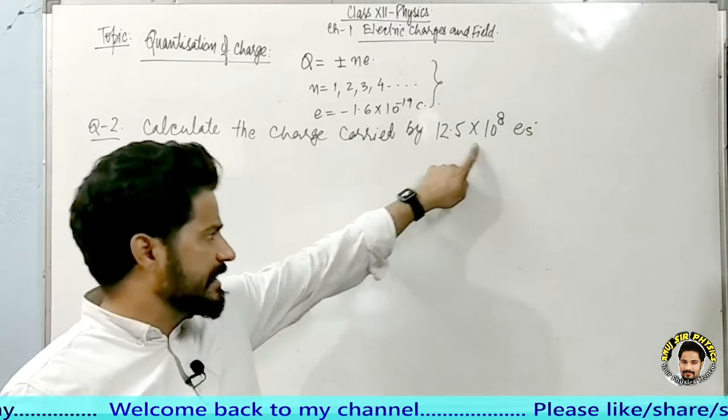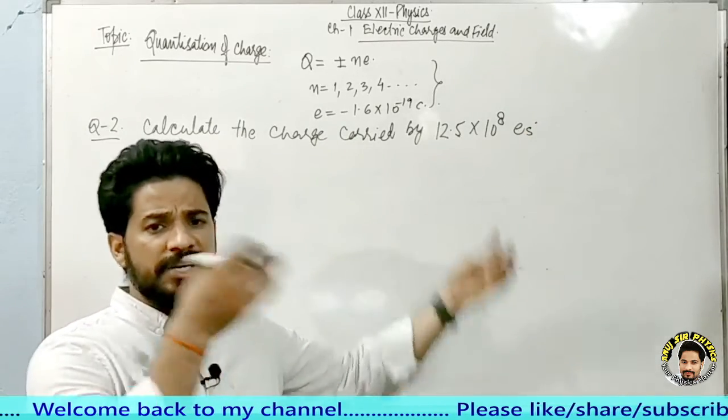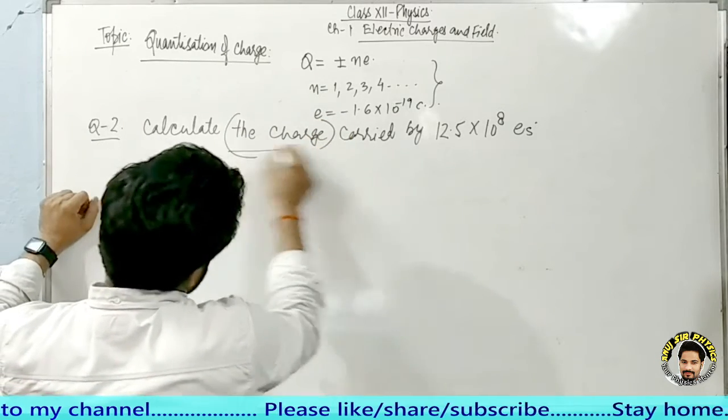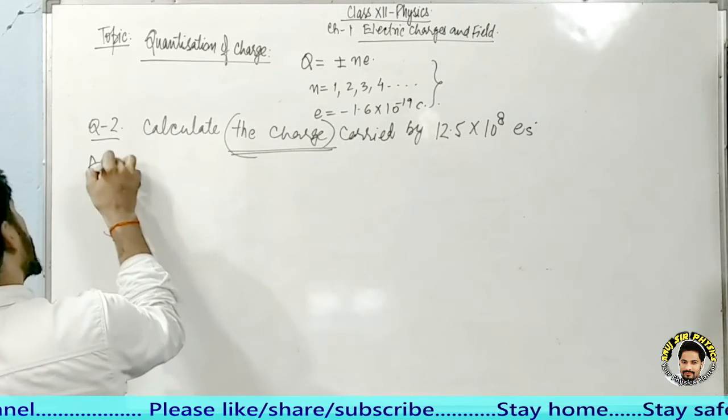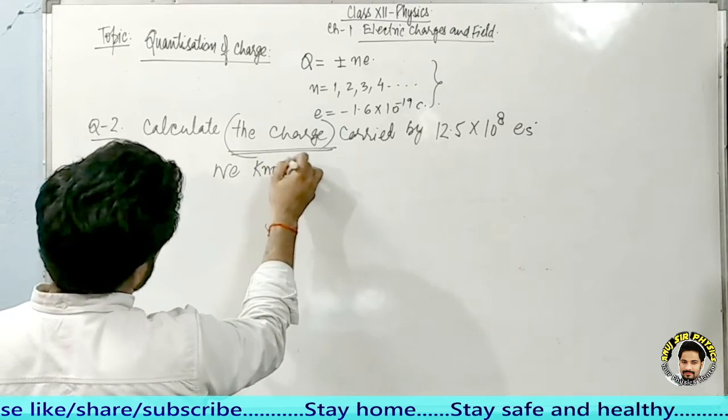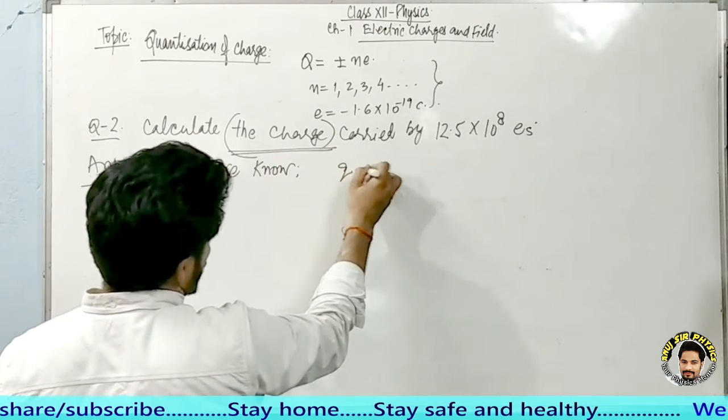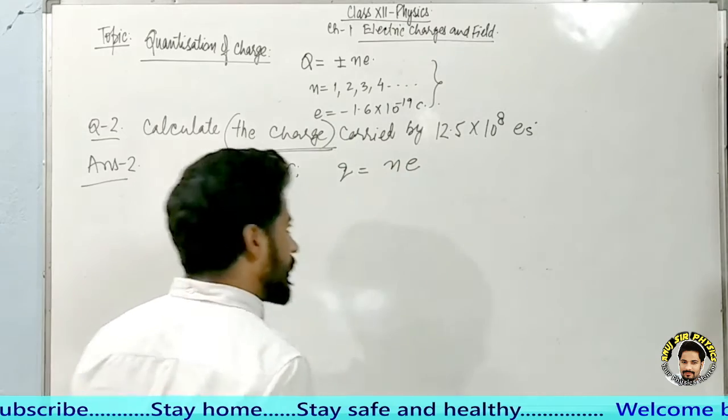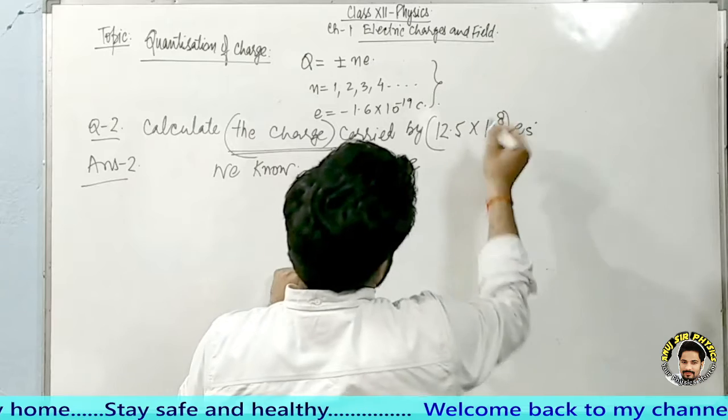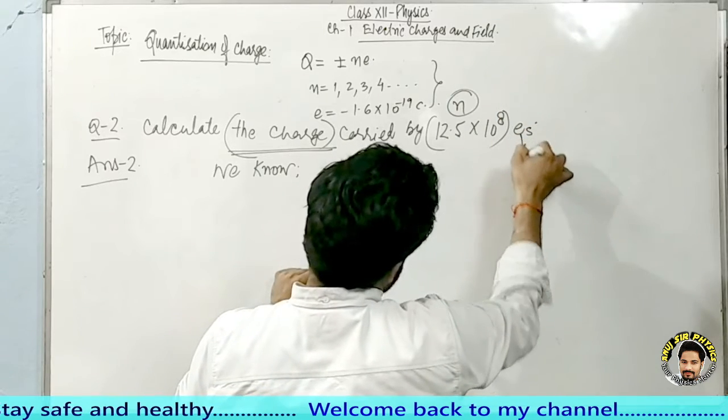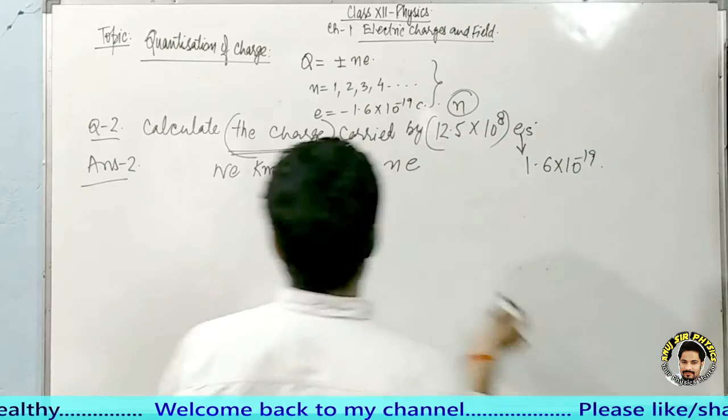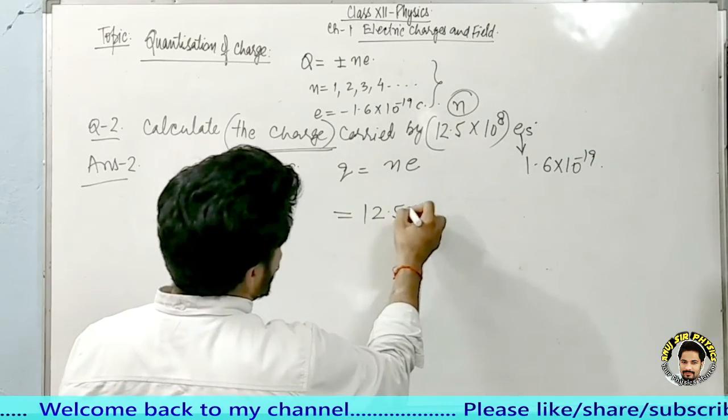The digits or the power may change but you will see calculate the charge - you have to calculate the charge. So answer 2, we will write: We know Q = n into e. Charge is being asked for this many electrons, so here n is given to you and e is the charge on electron.